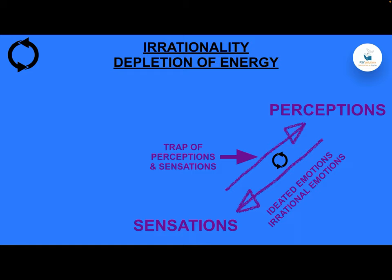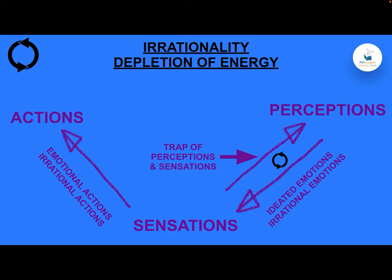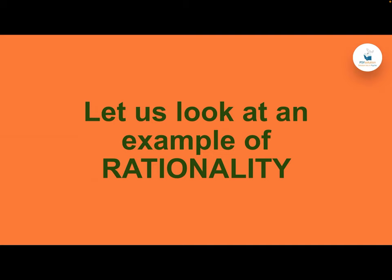This is a trap of perceptions and sensations — an example of ideated emotions or irrational emotions. With this state of zapped vitality in the trap, if we take action, it will be a low energy action — an emotional or irrational action. Further, since it is low energy or stimulated energy, it will bring an excuse to our perception, which is an example of irrational thought, and the trap goes on and on.